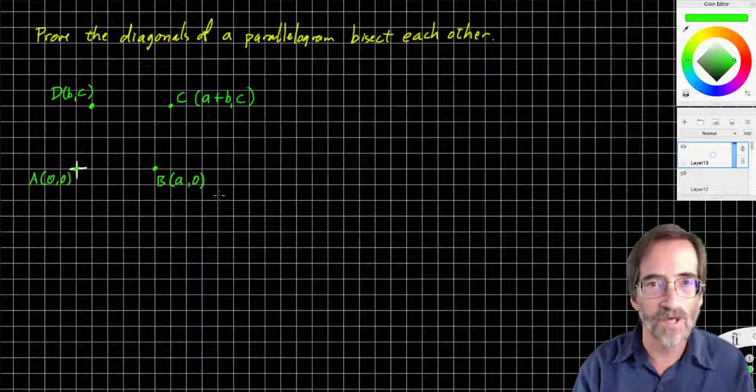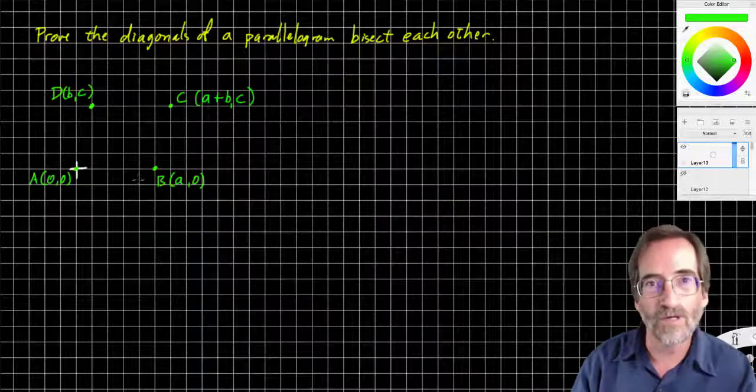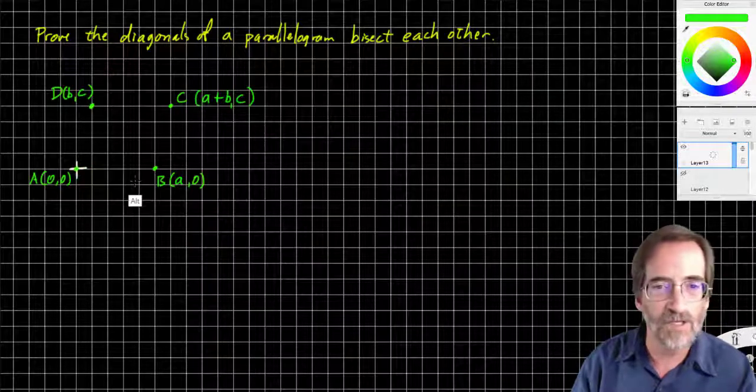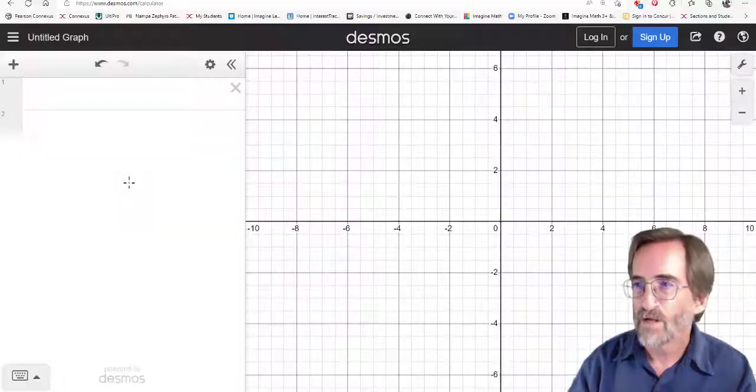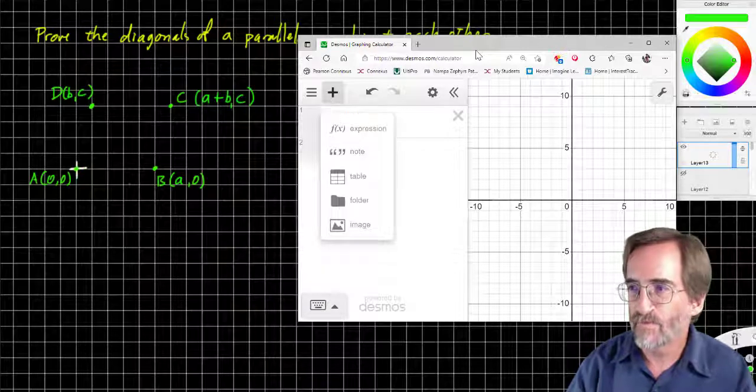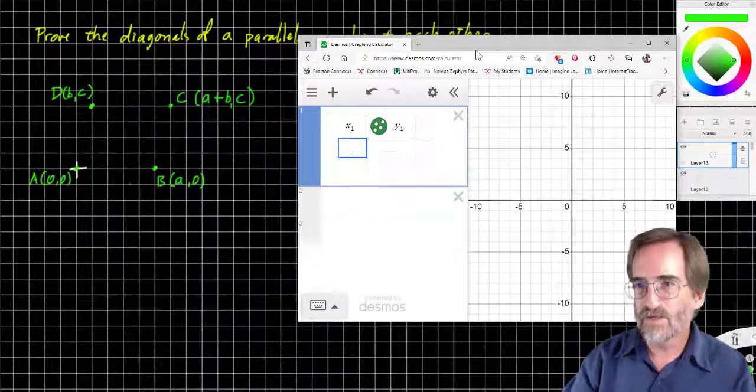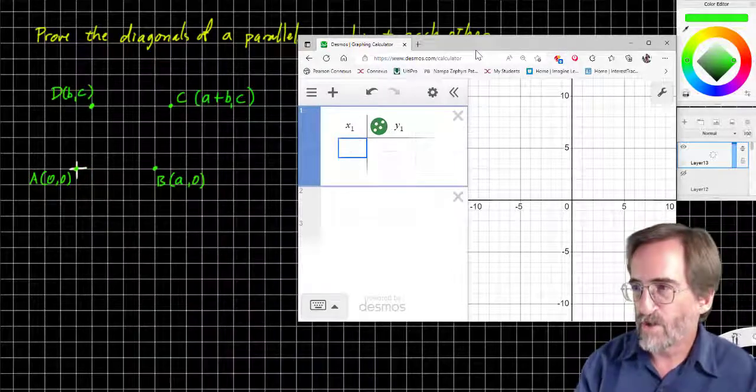I know this can be really confusing. But hopefully Desmos will help it to make sense. This now represents a generic parallelogram. In fact, it represents all parallelograms. And let me demonstrate in Desmos here. Let me pull up Desmos. And I'm going to move it over a little bit.